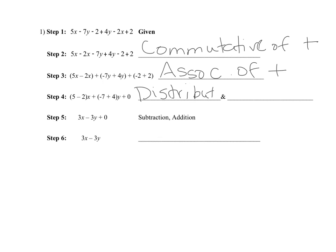The next property happening here — look at this part: negative two plus two bringing us to zero. What property says negative two plus two equals zero? That's the additive inverse, because you are adding opposites to get zero. That's the additive inverse property.